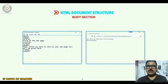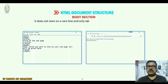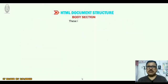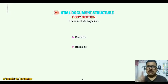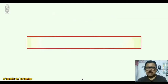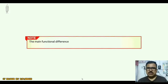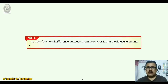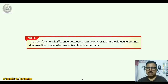A text-level element does not start on a new line and only takes up as much width as necessary. These include tags like bold <b>, italic <i>, and line break <br>. The main functional difference between these two types is that block-level elements do cause line breaks, whereas text-level elements do not cause line breaks.